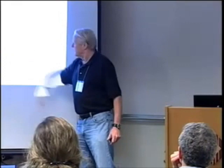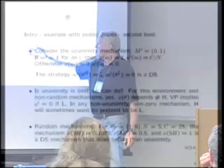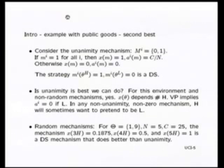The strategy to vote yes if you're high, no if you're low, is a dominant strategy for this mechanism. It's not efficient — it doesn't necessarily produce first-best. It gives us the public good only in the one environment where everybody is high; otherwise we get nothing. That's not a very satisfactory mechanism, but it is a dominant strategy mechanism. And it turns out for this environment, if I restrict to non-random mechanisms, unanimity seems to be the best we can do for this simple two-type world.